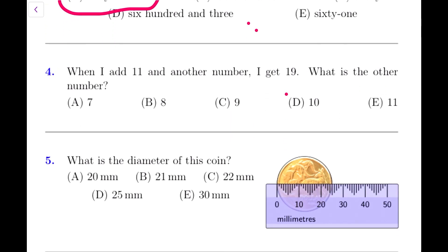When I add 11 and another number I get 19. So 11 plus some number gives you 19. What is the other number? Now 11 and what more will make 19? That is 8. 8 is the correct answer.